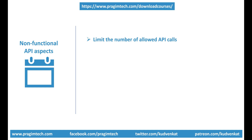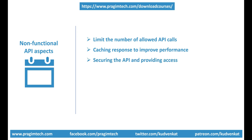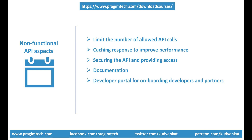Like this, there are several non-functional aspects that most APIs need to have. For example, caching response to improve performance, securing the API and providing access, documentation — that is, available endpoints, supported operations, what to pass as parameters and what we get back.